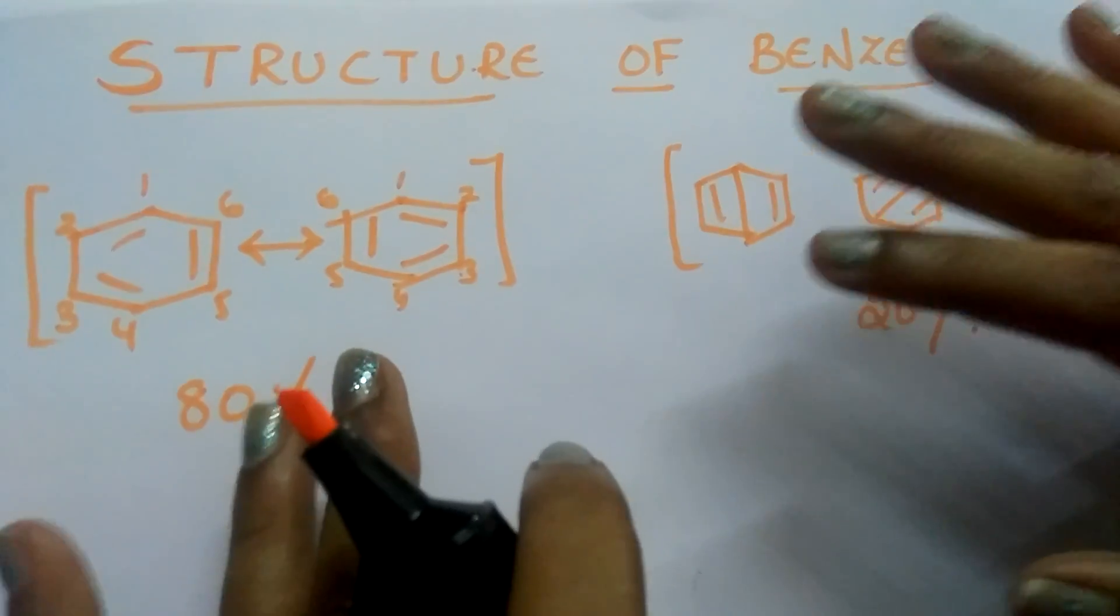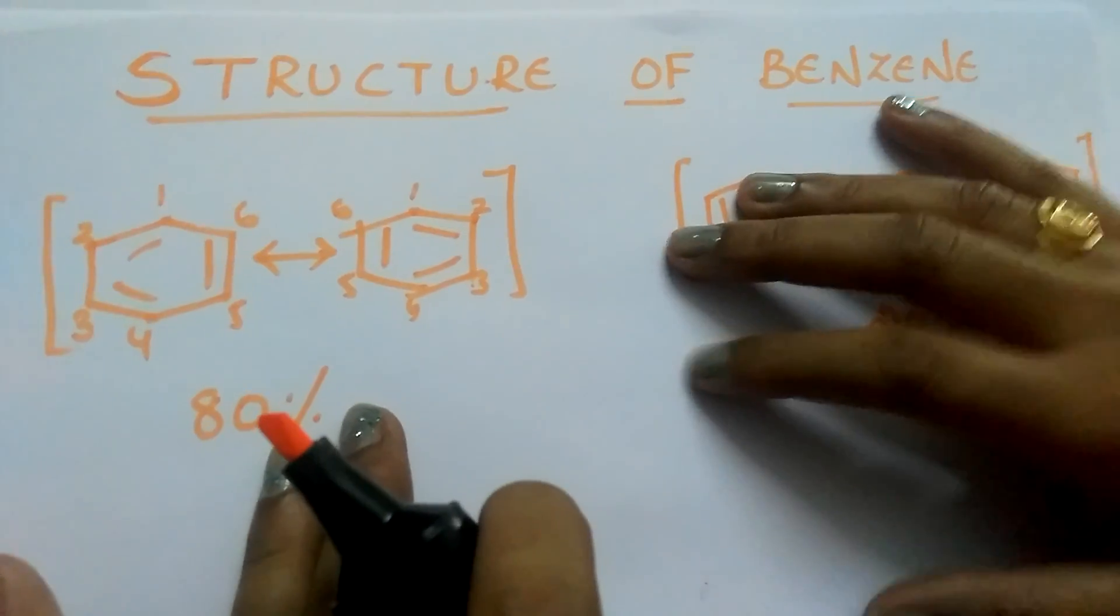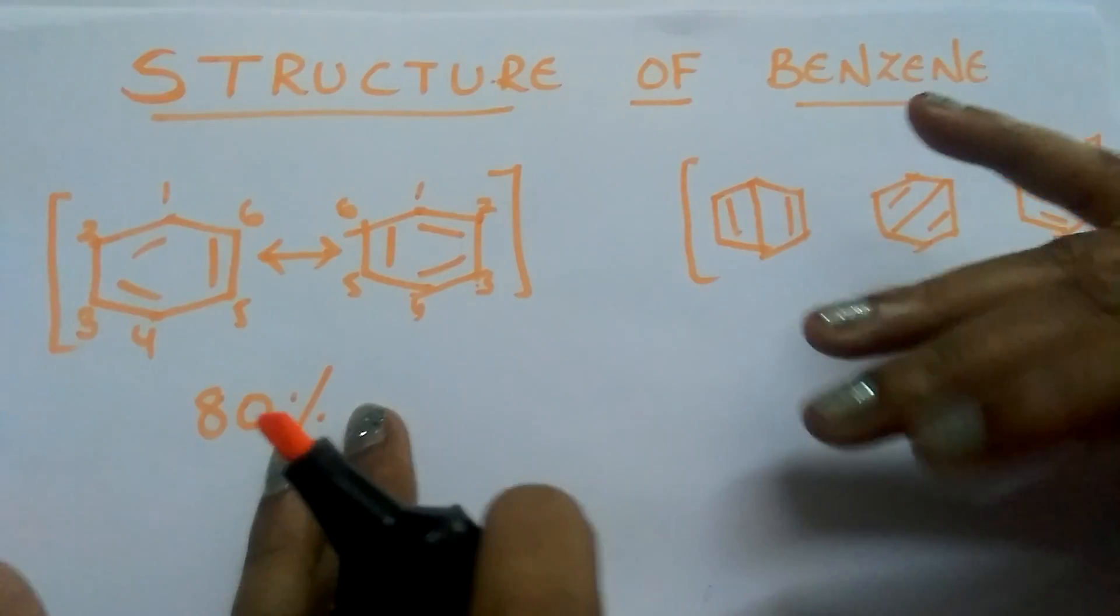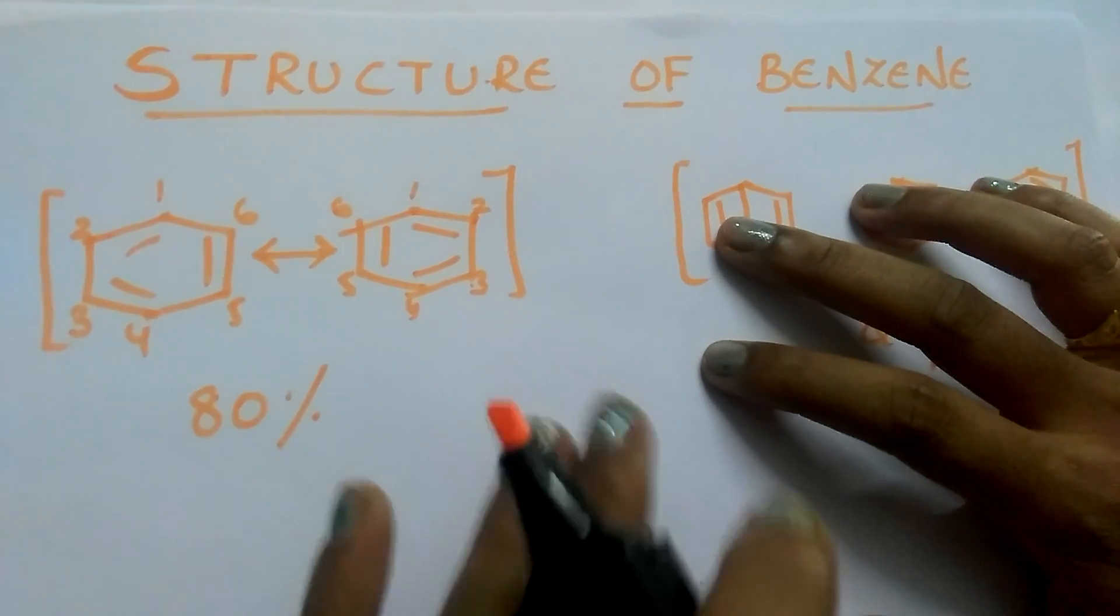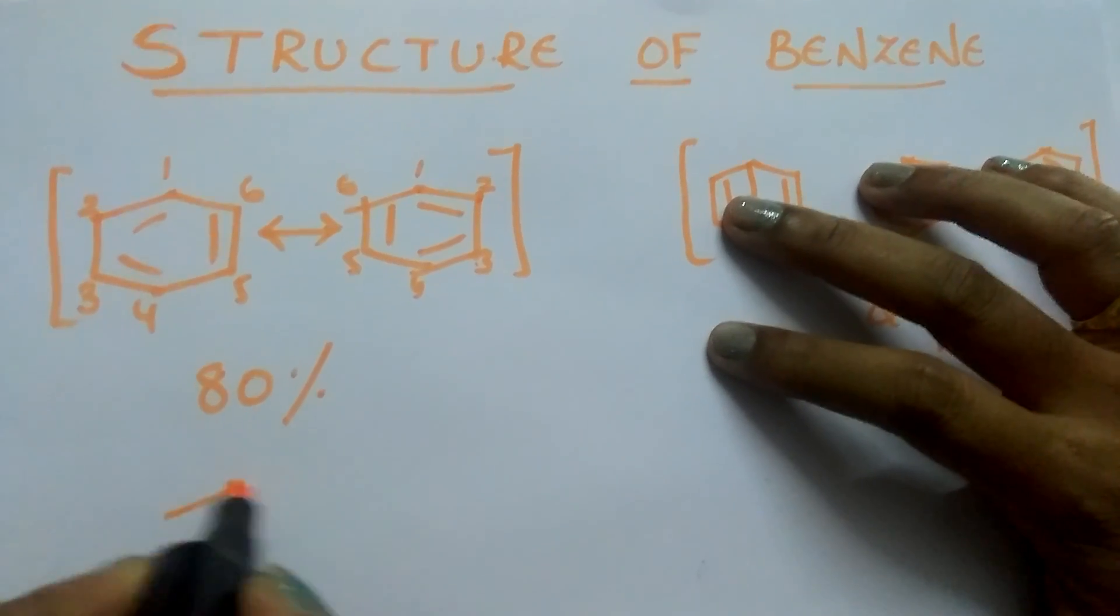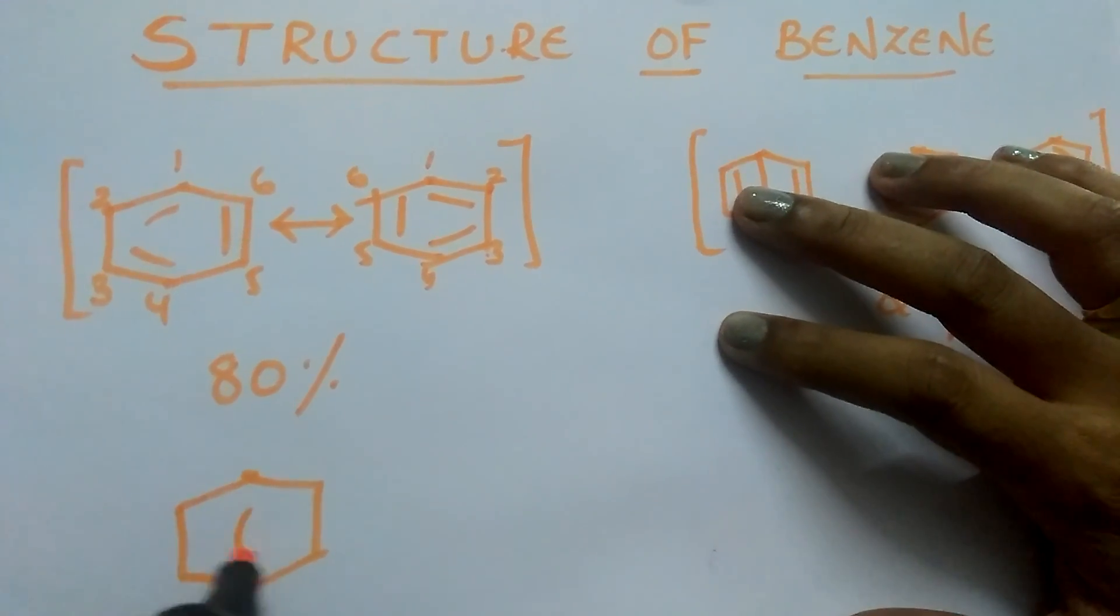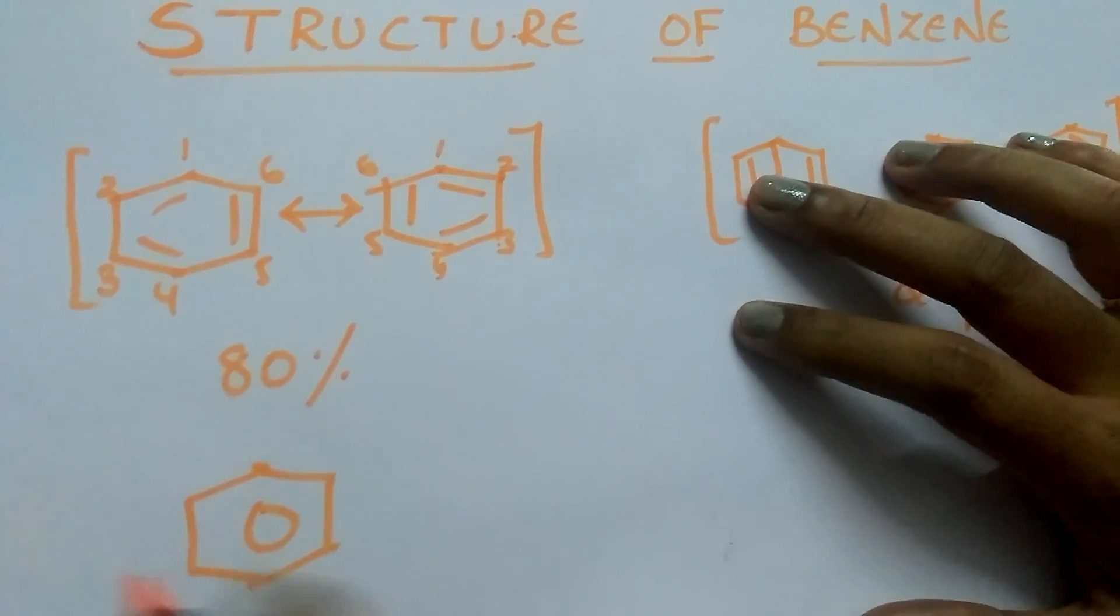These structures are just imaginary structures which are written to explain the properties of benzene. This is the modern explanation through resonance. This is the real structure for benzene which was explained by Kekule.